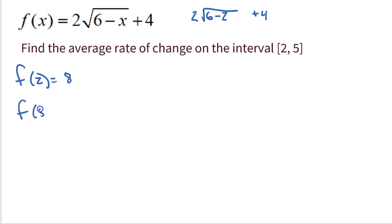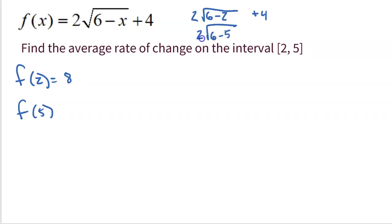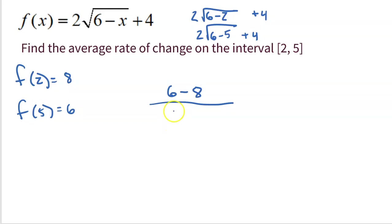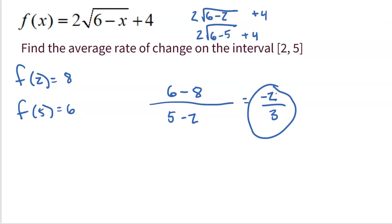What about the output at five? I'm going to plug in five: six minus five, take the square root, times two, add four. Six minus five is one, the square root of one is one, one times two is two, two plus four is six. So to find the average rate of change on the closed interval two to five, I subtract outputs on top: six minus eight. Subtract the inputs in the denominator: five minus two. Six minus eight is negative two, five minus two is three. So the average rate of change is negative two thirds.